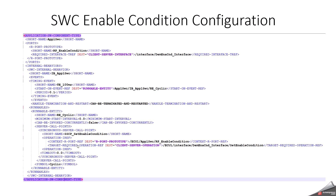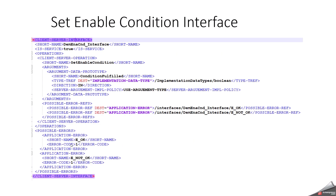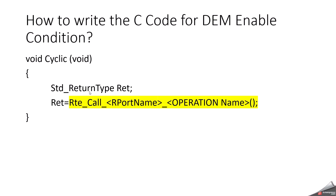On the application software component side, we have an R-port and a timing event. I have configured a timing event to monitor cyclically, so I have a runnable entity called RE_Cyclical. I have mentioned a synchronous server call point because I am going to make a synchronous method, and I have mentioned the enable condition operation. The interface has one client-server operation with one argument type; another argument will come as a predefined argument to be discussed in future. It has two possible error references: E_OK and E_NOT_OK. In the C code, the cyclic function gets called periodically and calls the RTE function, which in turn calls Dem_SetEnableCondition.